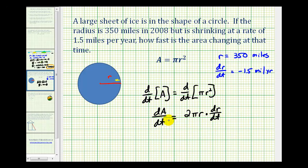So this derivative function is the function that will tell us the rate of change of the area with respect to time when r is equal to 350 miles and dr/dt is equal to negative 1.5 miles per year.